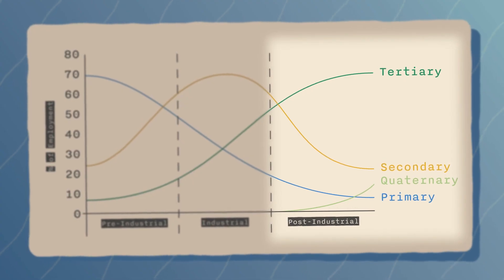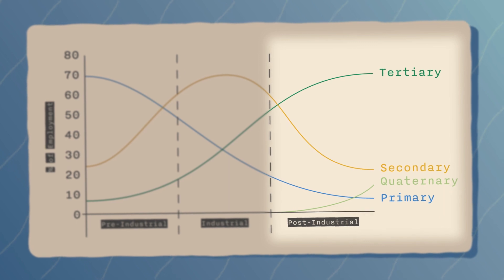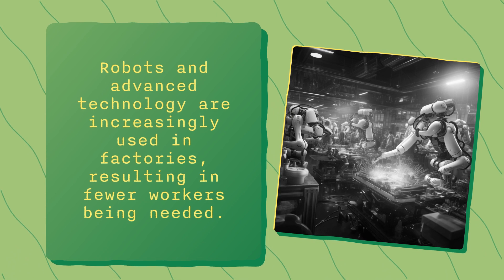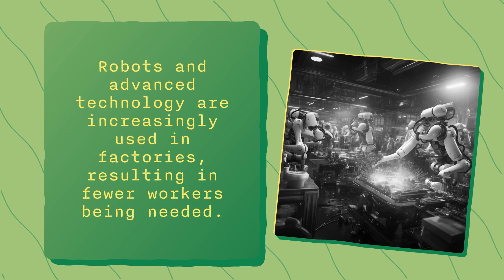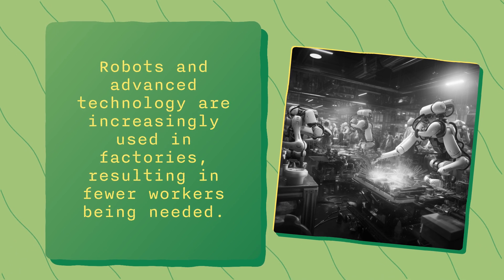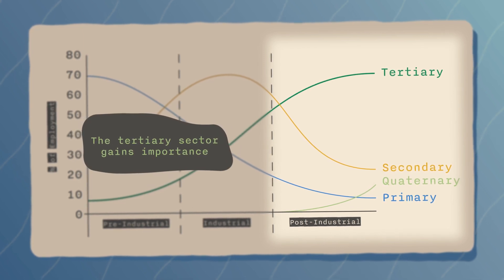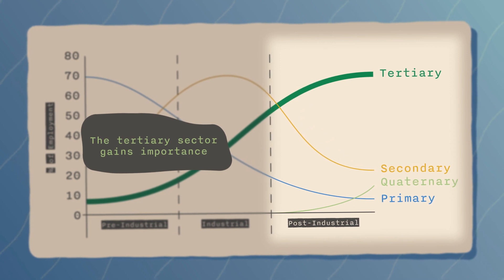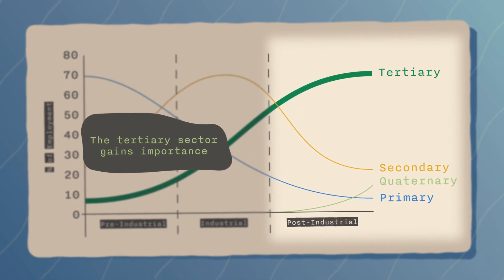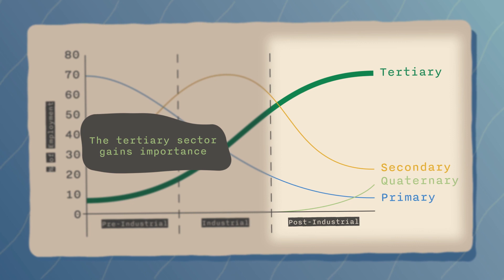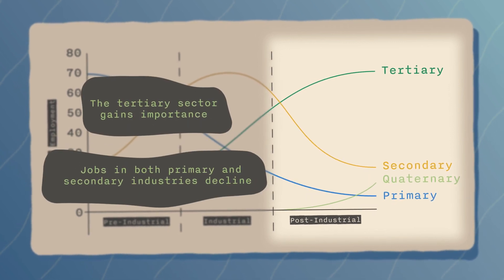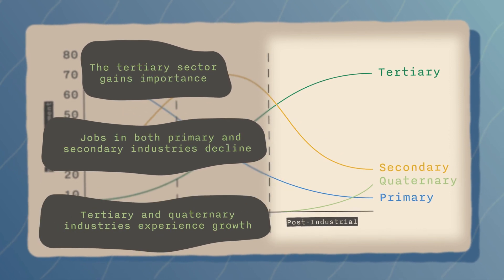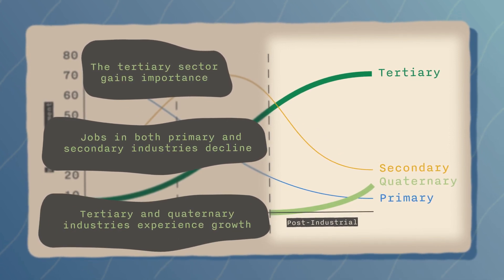Phase three: post-industrial. In this phase, robots and advanced technology are increasingly being used in factories, resulting in fewer workers being needed. The tertiary sector gains importance as people have more disposable income, leading to an increased demand for services like entertainment. During this stage, jobs in both primary and secondary industries decline, whilst tertiary and quaternary industries experience growth.